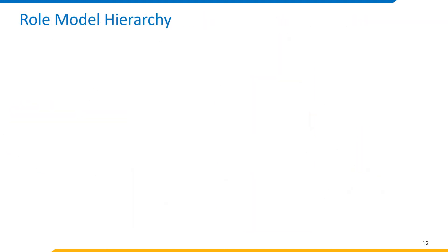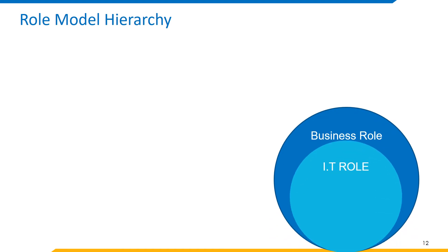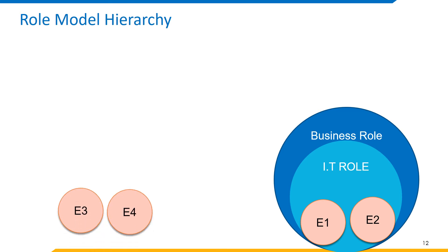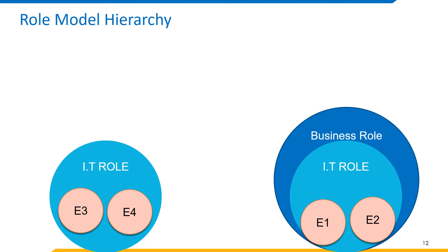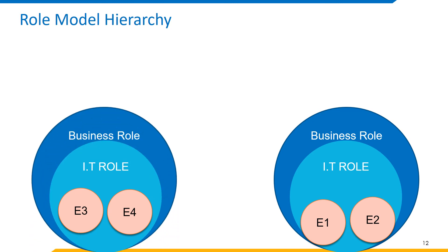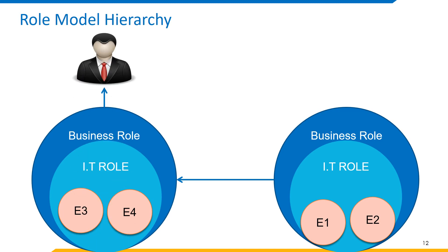SailPoint IdentityIQ maintains a hierarchical role model which consists of business roles, IT roles and entitlements. Business roles identify job functions by which users can be grouped, and IT roles encapsulate sets of system entitlements, where entitlements represent individual system authorizations. For example, entitlements E1 and E2 are encapsulated in an IT role assigned to a business role; similarly, entitlements E3 and E4 are encapsulated in another IT role and assigned to a business role. A business role can inherit an IT role or another business role, and when this business role is assigned to a user, the user acquires the properties of all inherited business roles.